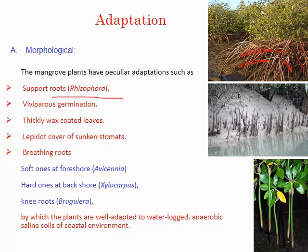Mangrove adaptation is very important. First, it has supporting roots — also called stilt roots — which anchor the plant against huge ocean waves and tides. About 50 percent of the time the plants are covered by high tide water, so these support roots protect them. Second is viviparous germination: because soil salinity is very high, there is a very low probability of germinating a seed in this hostile condition, so germination takes place while still attached to the parent plant body.